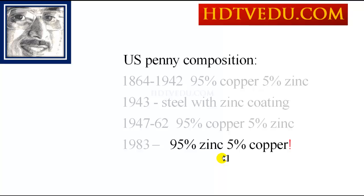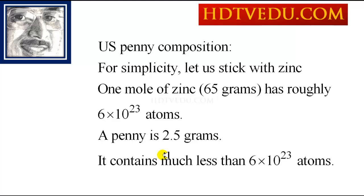The US penny, believe it or not, started with 95% copper, but today it is 95% zinc and 5% copper. So for simplicity, let's assume that the US penny is made of zinc as opposed to copper.